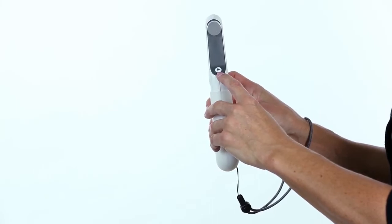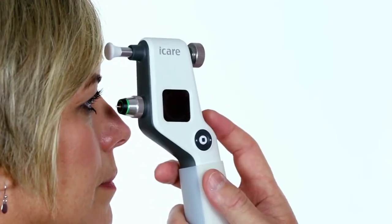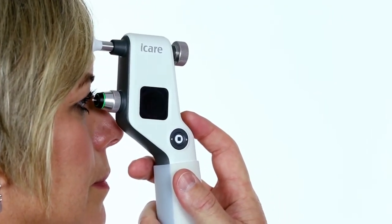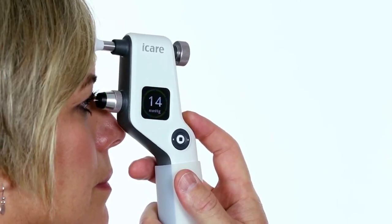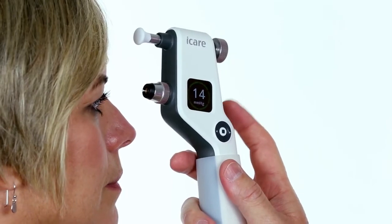Press and hold the measure button to perform the automatic measurement in a series. Six measurements are taken consecutively. Once the measurement is complete, you will hear a long beep and the final pressure will show on the display.